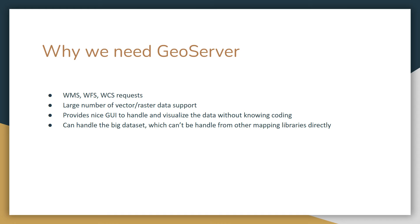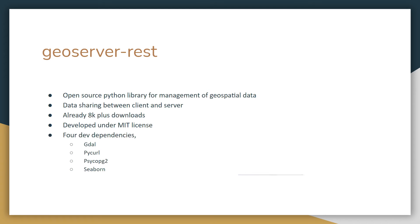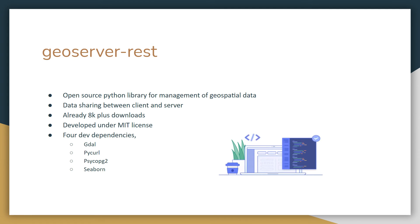GeoServer is very important for spatial data management. The GeoServerREST is an open source Python library for management of geospatial data. It can share raster and vector data between client and server. It already has 8K+ downloads and is developed under the MIT license. It has four dev dependencies: GDAL, PyCurl, Psycopg2, and C4.